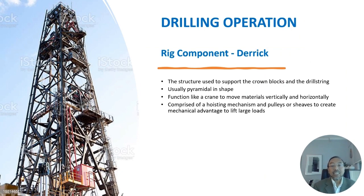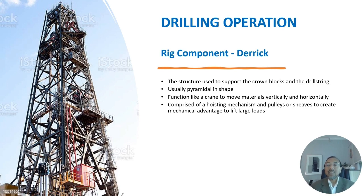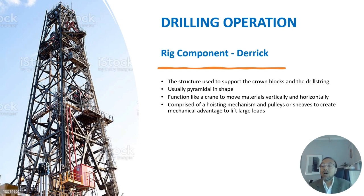The derrick is the structure used to support the crown blocks and the drill string. Usually pyramidal in shape, it functions like a crane to move material vertically and horizontally, comprising a hoisting mechanism and pulleys or sheaves to create mechanical advantage to lift large loads. The derrick is erected to raise and lower drilling tools in the well and to insert and remove well casing or pipe. It is designed to be tall enough to allow new sections of drill pipe to be added as drilling progresses, and can handle stands of 2, 3 or 4 joints of drill pipe.